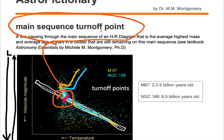The main sequence turnoff point is a line passing through the main sequence that represents the average highest mass and average age of the stars in a cluster still remaining on the main sequence. If they're off the main sequence, they're dying objects.